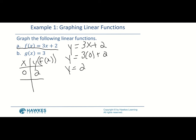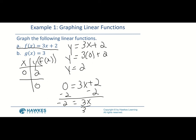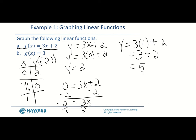For the x-intercept, we set y = 0: 0 = 3x + 2, subtract 2 from both sides to get 3x = −2, so x = −2/3. If you don't want to deal with a fraction, plug in x = 1 instead: y = 3(1) + 2 = 5. So the point (1, 5) is also on the graph. Now we have points to plot.